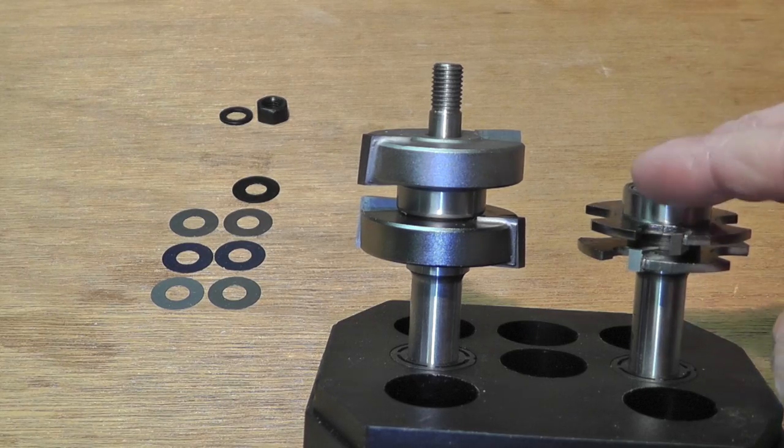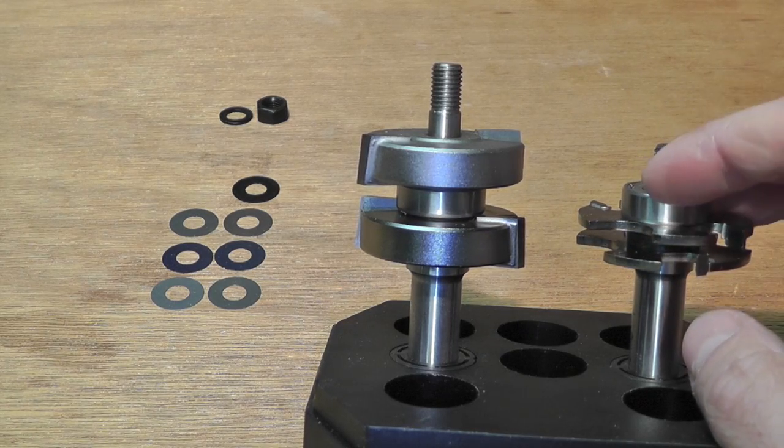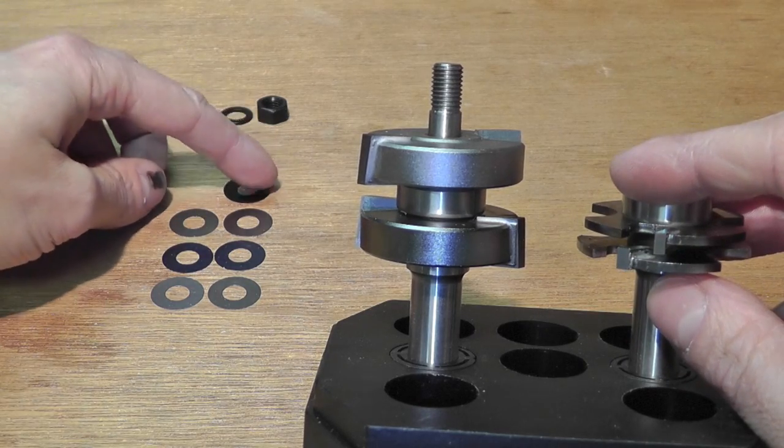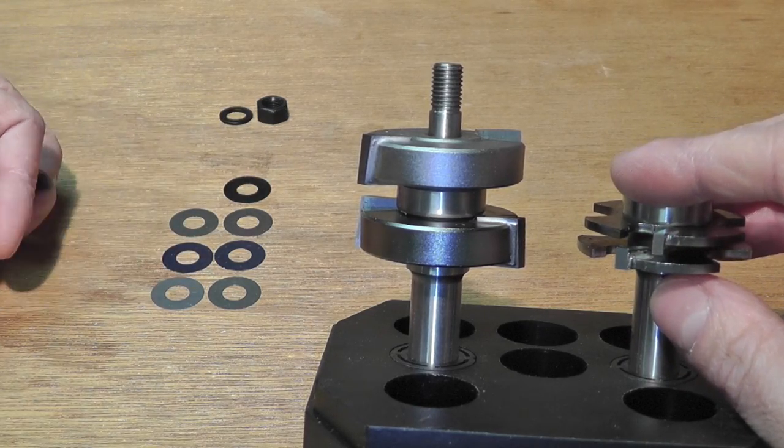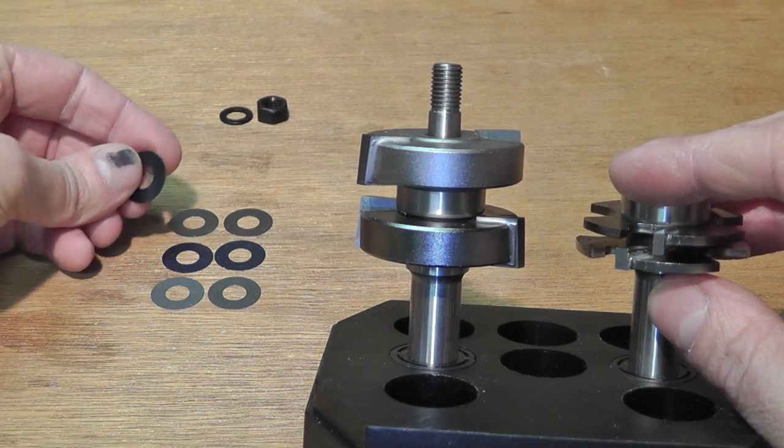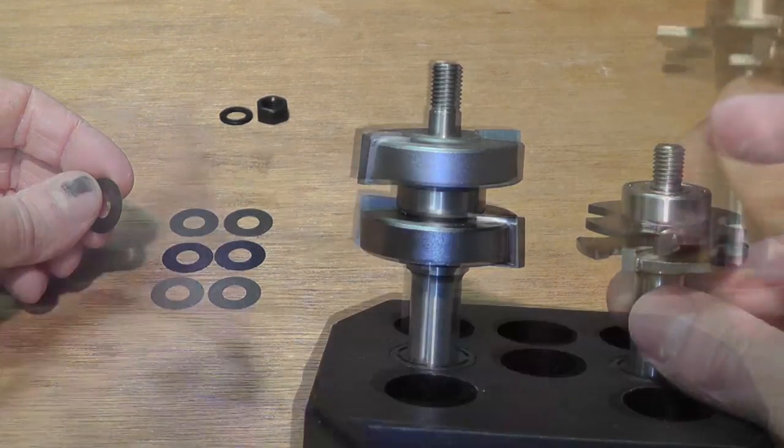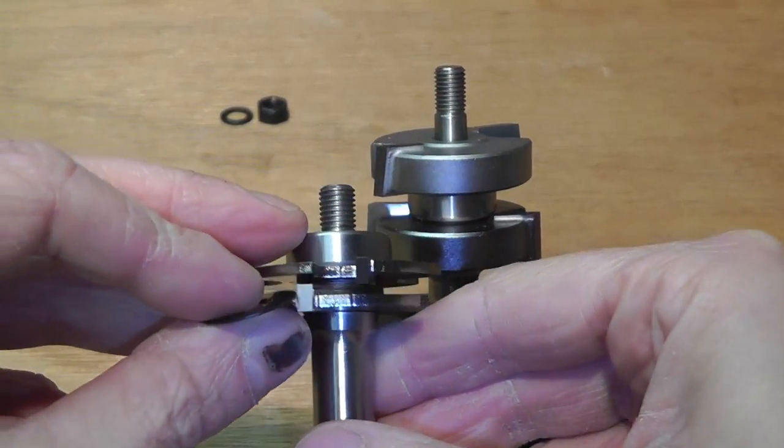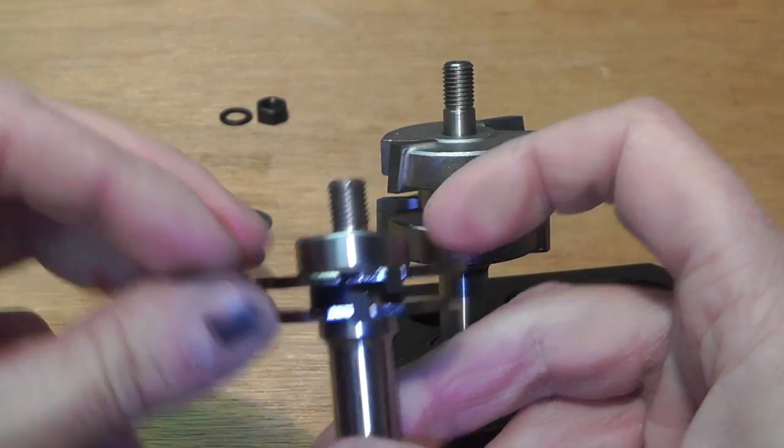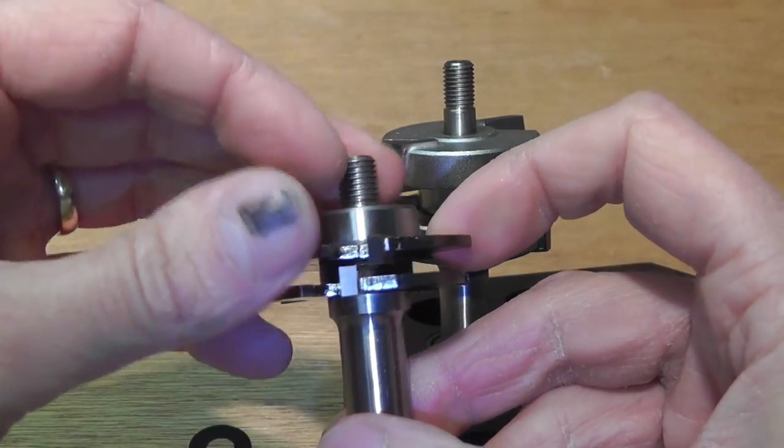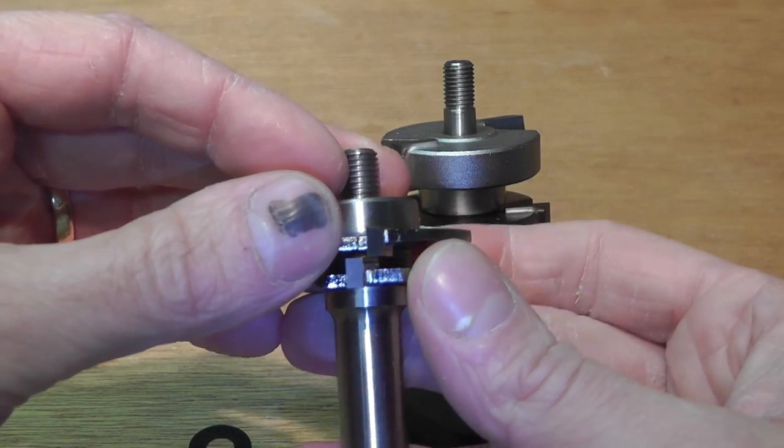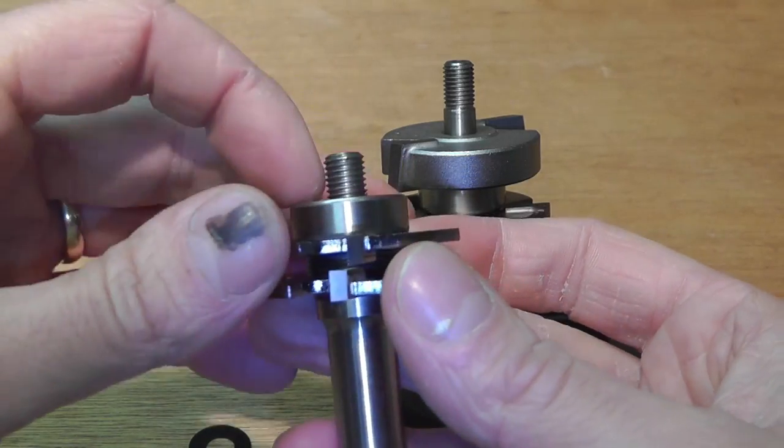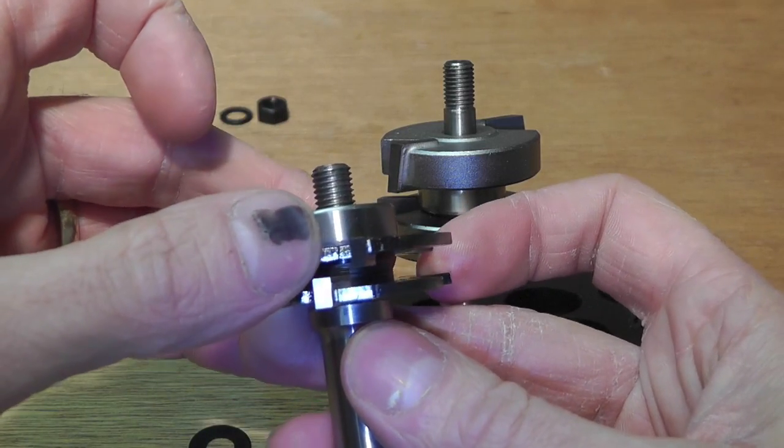Now I have these four one millimeter spacers in between, and this is the maximum width that we can go. But as you can see, we still have a whole bunch of other spacers here. So why would we not be able to put these in the middle? The answer to that is you have to look at the two cutters here. You can see these are pretty close together already, and if we add more spacers in the middle...